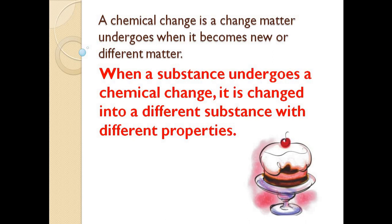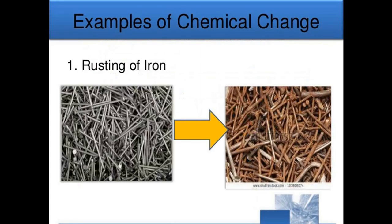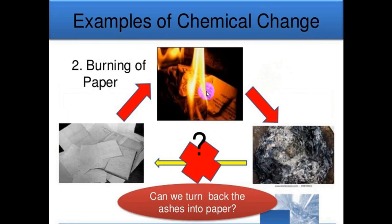Let's have some examples. The first one is rusting of iron. When you look here at these nails, of course we know how they look like. It's the original shape of nails. They are silver, they are shiny, and they are hard. When they are exposed to the atmospheric air, they will get rust. And this means that their color will change, their texture will also change. Burning of paper.